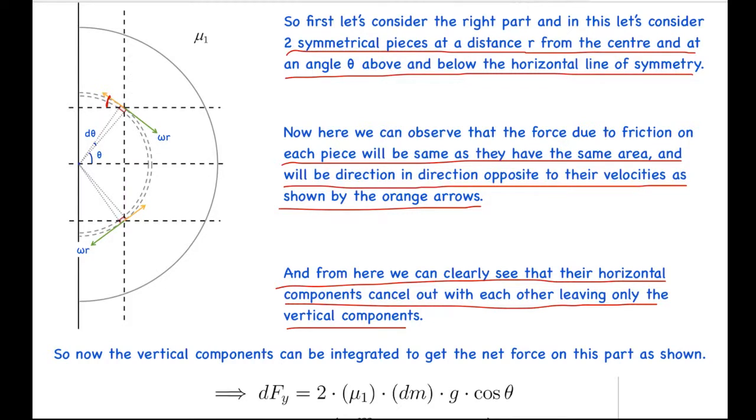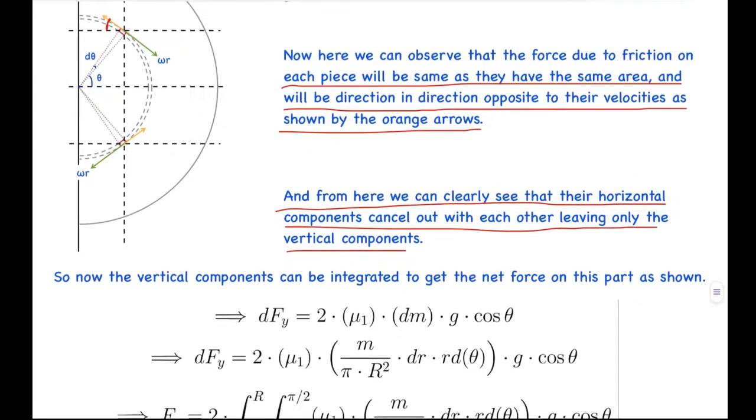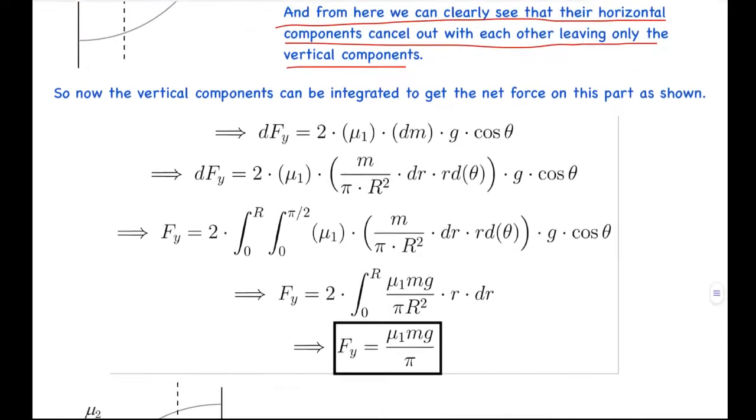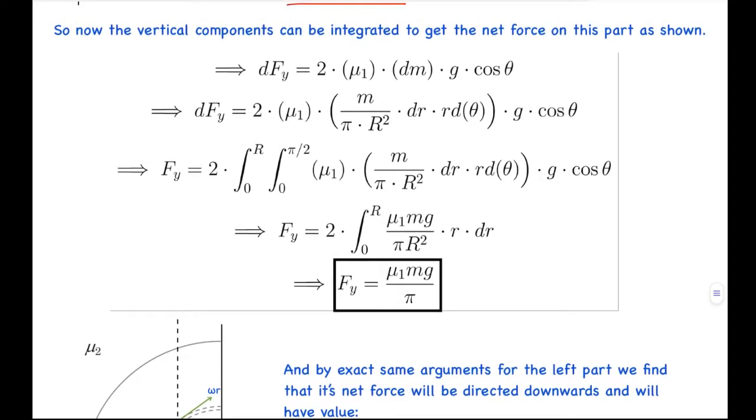So now the vertical components can be integrated to get the net force on this part as shown. So here I have written dFy to be equals to twice of mu1 times dm g cos theta, which is the horizontal component. Cos theta comes due to the horizontal component and dm can be written as m by pi r square which is the mass per unit area of the disk times the small area of this element which will be dr times r d theta.